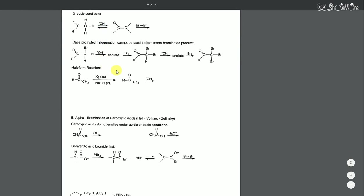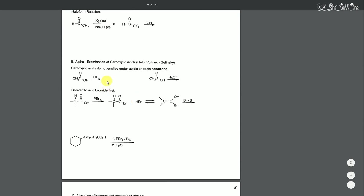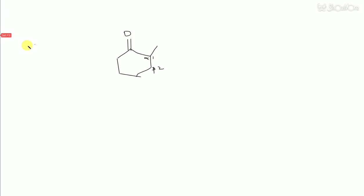You also need to know one other reaction, which is the Hell-Volhard-Zelinsky reaction, which essentially we're going to be using PBr3 and Br2. So we're going to be using PBr3 and Br2. Let me just demonstrate, so it's using carboxylic acid, so let's say I start with the carboxylic acid, and I want to brominate the alpha position, so I use PBr3, Br2.